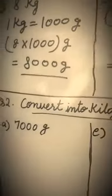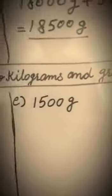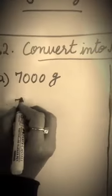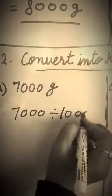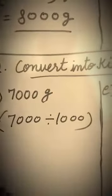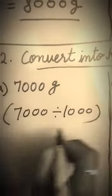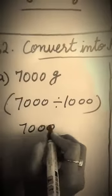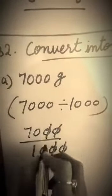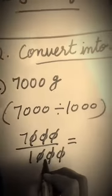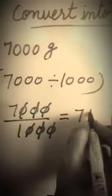Next is convert into kilogram and gram. Now we have 7000 grams. Simply what do we do? We divide by 1000 to convert to kilograms. How do we do it? See, simply three zeros: one zero, second zero, and third zero are cut. So we will get 7 kilograms.